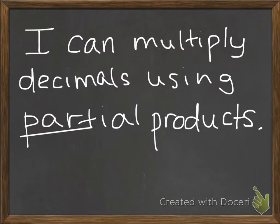This video will teach you how to multiply decimals using a method called partial products. Partial products allows you to break a decimal into its whole number and decimal part and then multiply the parts to find the full product.